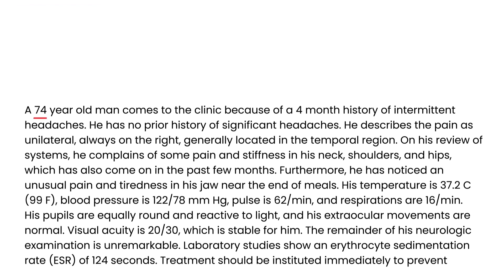A 74-year-old man comes to the clinic with a four-month history of intermittent headaches with no prior headache history. The pain is unilateral, always on the right, in the temporal region. On review of systems, he complains of pain and stiffness in his neck, shoulders, and hips over the past few months. He also notices unusual pain and tiredness in his jaw near the end of meals. Temperature is 99, blood pressure 122/72, pulse 62, respirations 16. Visual acuity is 20/30, stable for him. Lab studies show an ESR of 124, which is high.